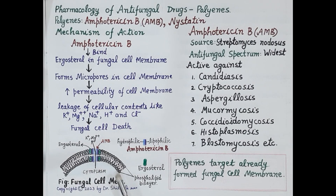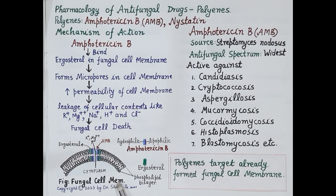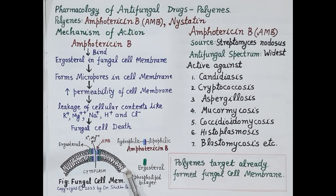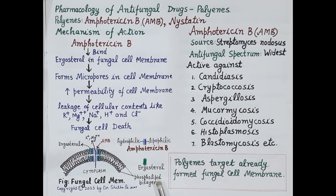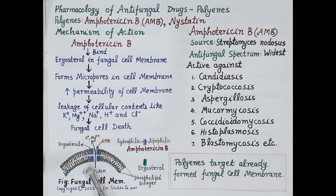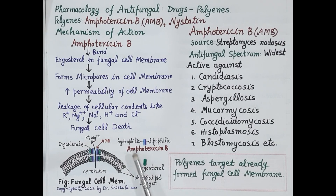Now look at this figure. Every fungal cell is bounded by a cell membrane. Like the human cell membrane, the fungal cell membrane is also made up of a phospholipid bilayer. But a special unique characteristic feature of the fungal cell membrane is the presence of ergosterols, shown here in green color.